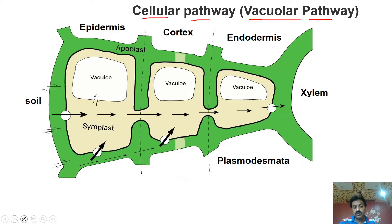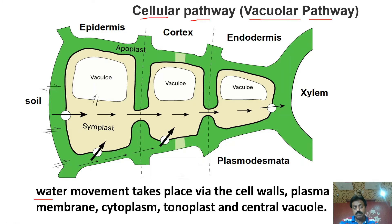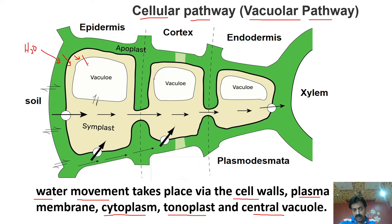Cellular pathway / vacuolar pathway کا sequence یہ ہے: پانی پہلے cell wall کو cross کرے گا، پھر plasma membrane کو، پھر cytoplasm سے ہوتا ہوا tonoplast کو cross کر کے central vacuole میں آئے گا — اور یہ ہر cell کے لیے repeat ہوتا ہے۔ اسی لیے اسے vacuolar pathway کہتے ہیں۔